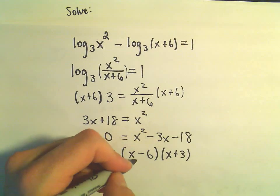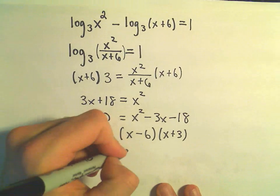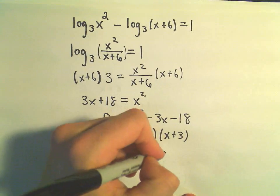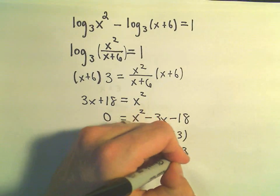That looks okay. So if we set each factor equal to 0, we'll get our potential solutions to be x equals 6 and x equals negative 3.